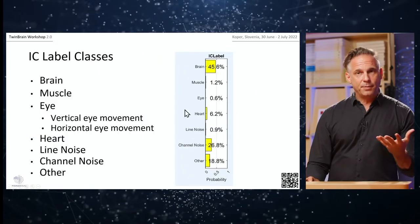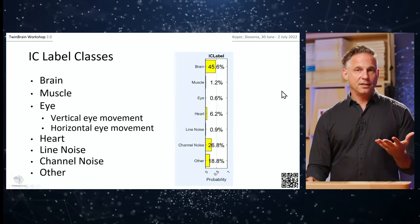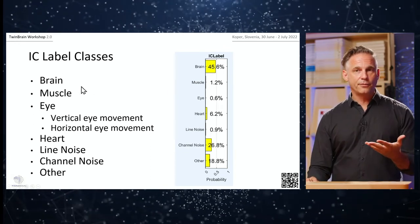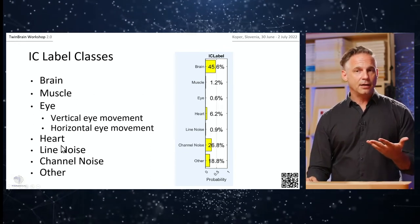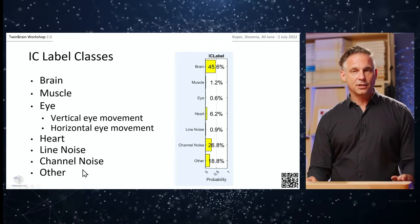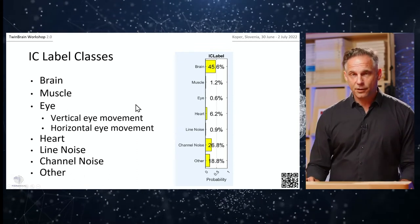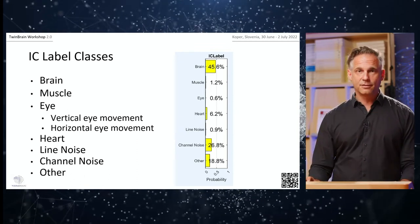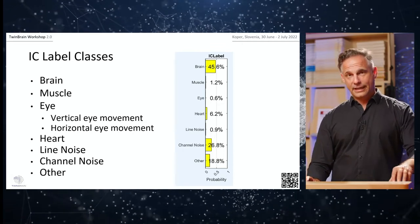Before going through the IC Label classes — brain, muscle, eye, heart, line noise, channel noise, and other — I suggest a short break so you can get a coffee, and most importantly so I can drink something. See you in five.